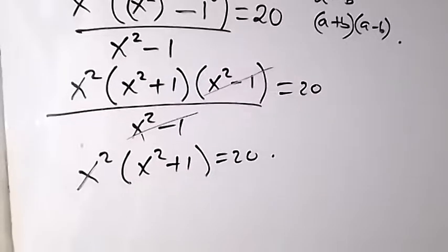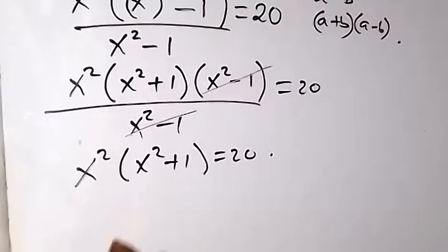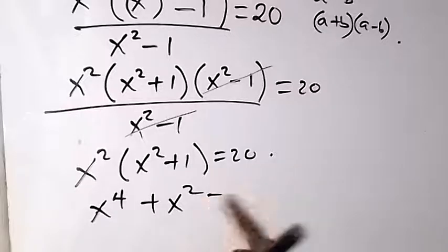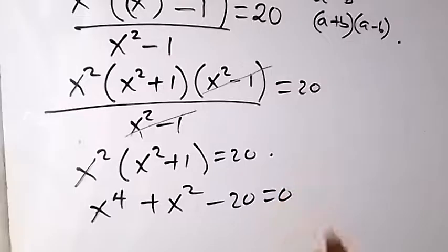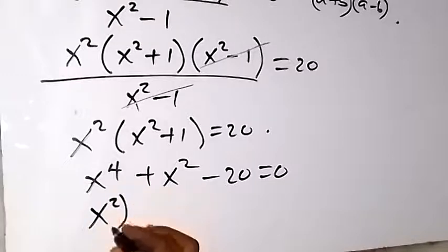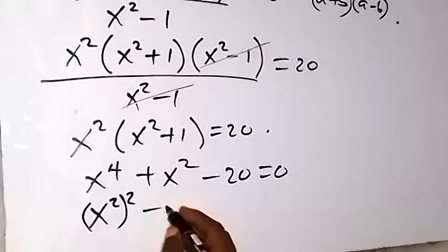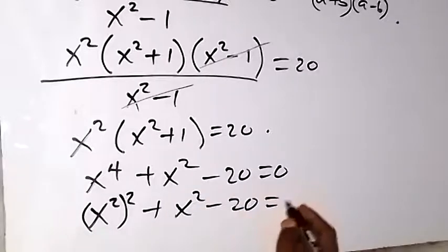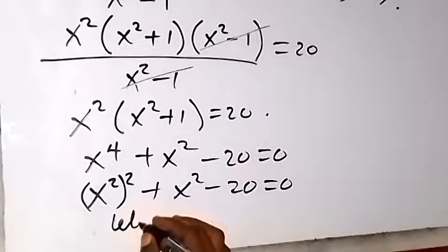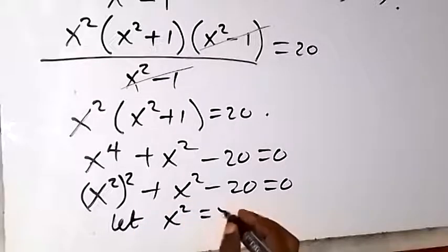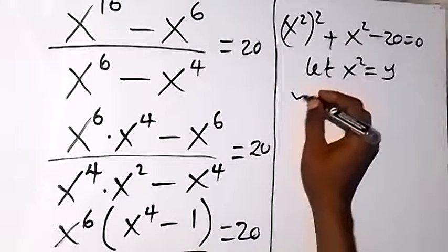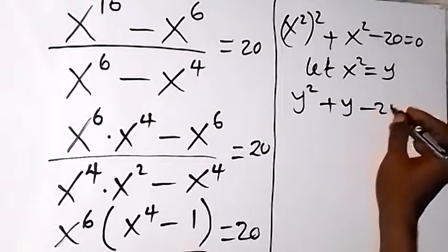Expanding, we get x^4 + x^2 = 20, which rearranges to x^4 + x^2 - 20 = 0. We can rewrite x^4 as (x^2)^2. Now let y = x^2, so the equation becomes y^2 + y - 20 = 0.